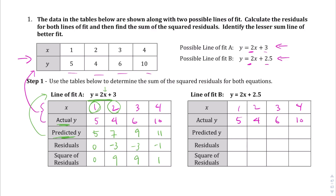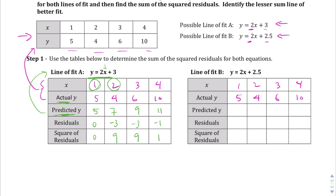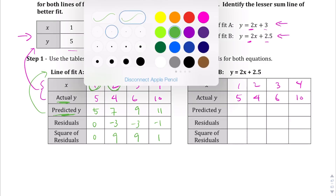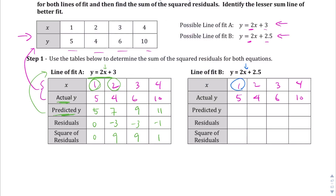Now we do the same for Line B. When x is 1: two times 1 is 2, plus 2.5 is 4.5. Continuing for the rest, we get 6.5, 8.5, and 10.5. Subtracting the predicted y's from the actual y's: 5 minus 4.5 is 0.5, squared gives 0.25. Four minus 6.5 is negative 2.5, squared is 6.25. Six minus 8.5 is negative 2.5, squared is 6.25. Ten minus 10.5 is negative 0.5, squared is 0.25.